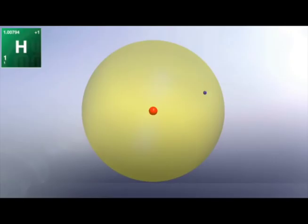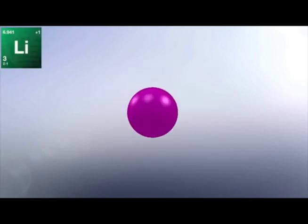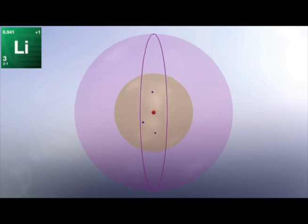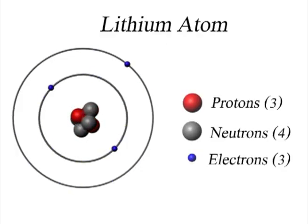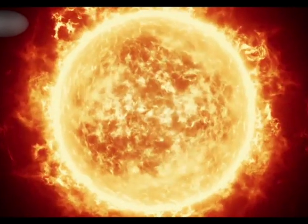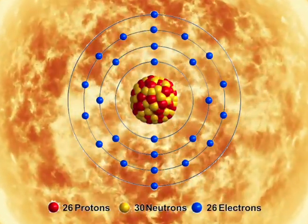How are bigger atoms made? We see how hydrogen atoms join to make helium atoms. Bigger atoms of the other elements are made the same way — hydrogen and helium join together with more neutrons to make lithium atoms. Lithium has three positive parts held together with neutrons, circled by three electrons. Over time, the same process repeats inside stars to make elements up to iron.